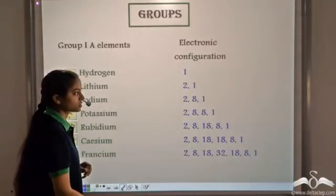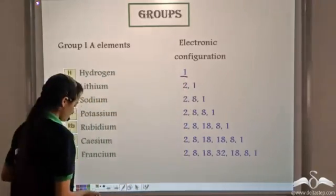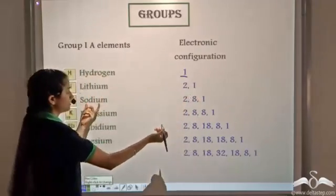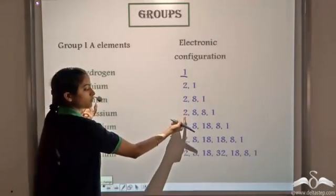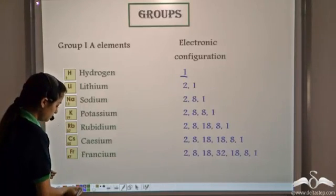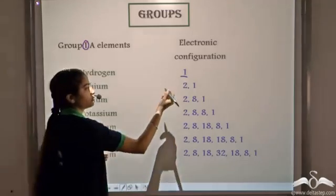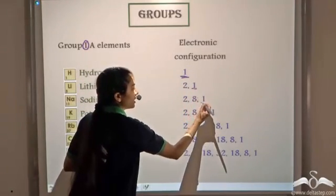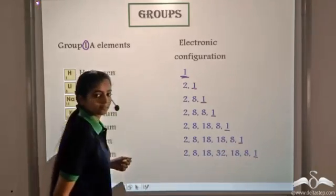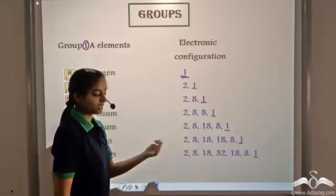Do you see any change? The first element has one shell. The second element, Lithium, has 2 shells. The third element, Sodium, has 3 shells, then 4 shells and so on. Also, these elements belong to group 1A, and each element has 1 valence electron. So the group 1A elements have 1 valence shell electron in each case.